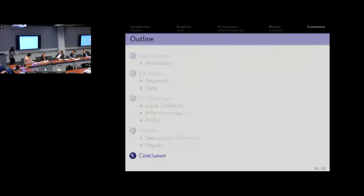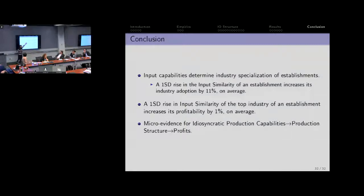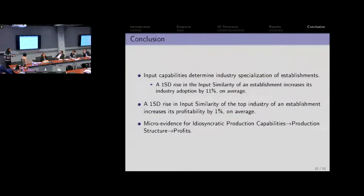To conclude: what we tend to find is that input capabilities do determine the industry specialization of establishments. It's about industry specialization, it's about production units — it's not telling us something about demand-side complementarities. A one-standard-deviation increase in the input similarity measure translates into, on average, about an 11% increase in the industry adoption rate. In terms of profitability, a one-standard-deviation increase translates into about a 1% increase in log profitability. This paper provides micro-evidence linking three pieces: idiosyncratic production capabilities translate into the production structure of the establishment, which in turn tells you something about profitability.